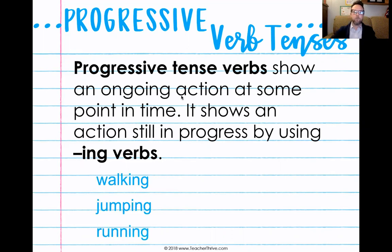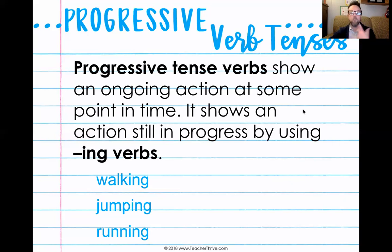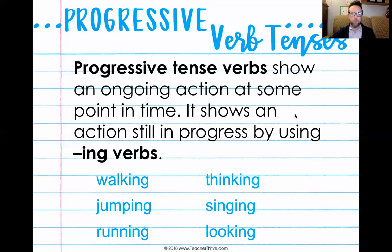So again, these are progressive verbs, and we show that something was an ongoing action using -ing verbs, like walking, jumping, running, thinking, singing, looking.